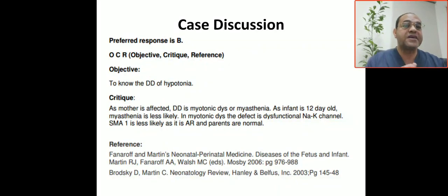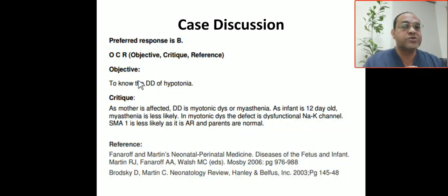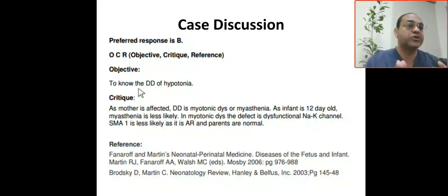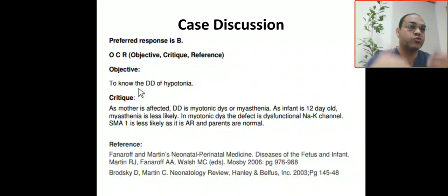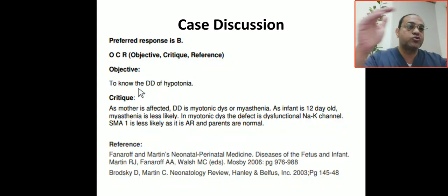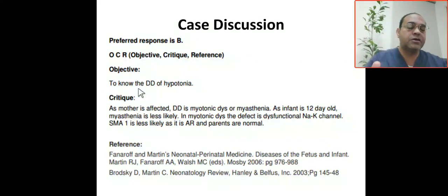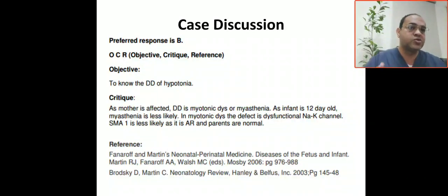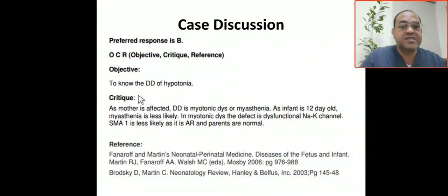So the correct answer is B — myotonia dystrophica. Our objective from this case is to differentiate the causes of hypotonia: central versus peripheral. If peripheral, further differentiate between anterior horn cell, neuromuscular junction, nerve defect, or muscular defect — myopathies or dystrophies.